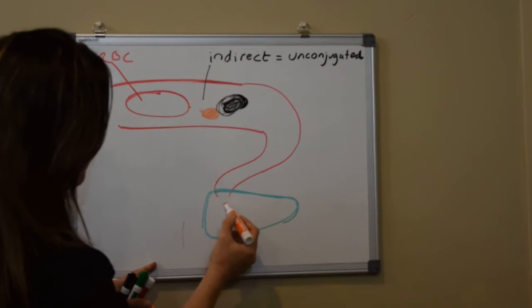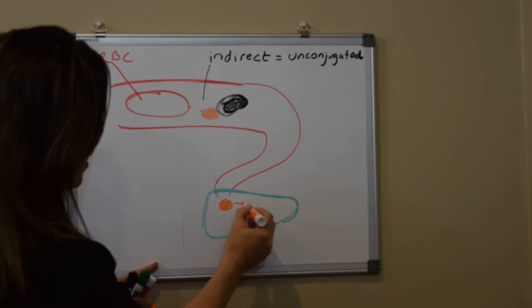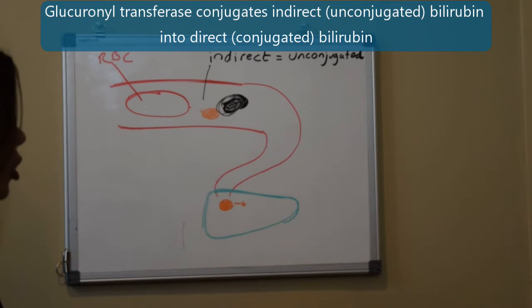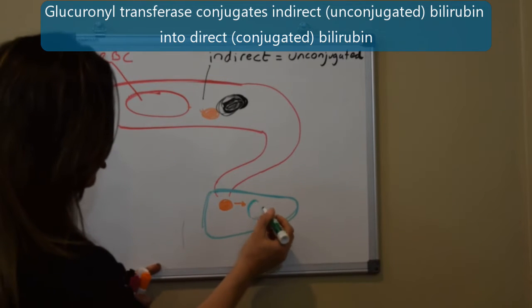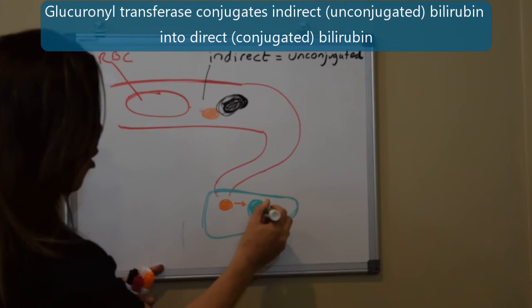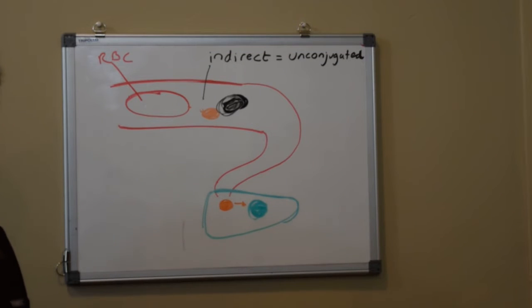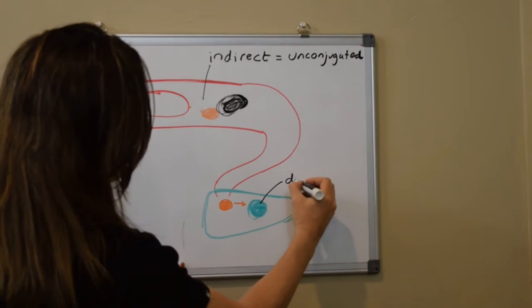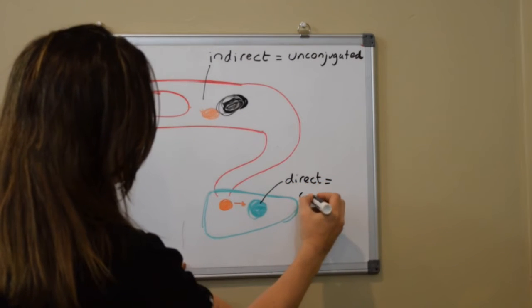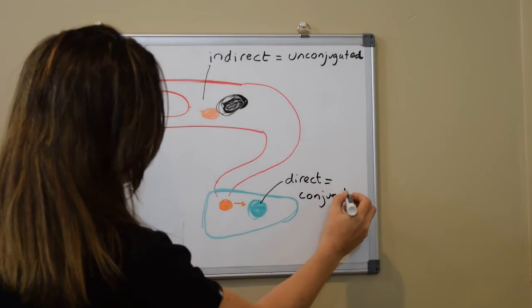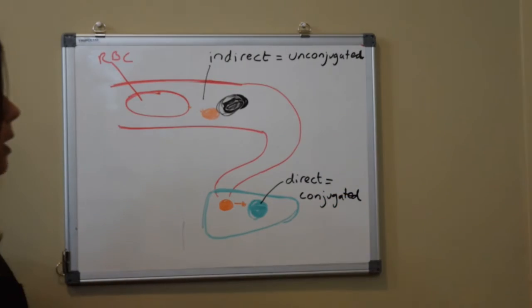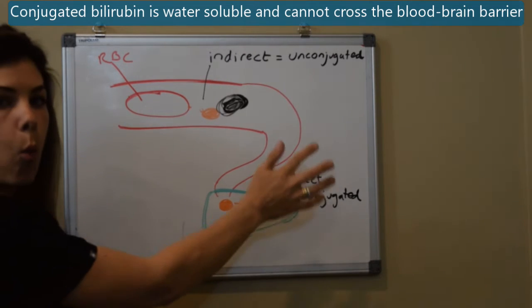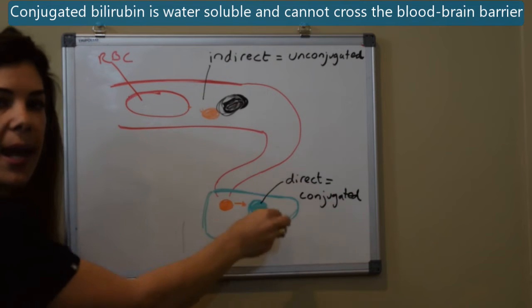In the liver the process of conjugation happens. In the liver an enzyme called glucuronyl transferase conjugates the indirect bilirubin to direct bilirubin or conjugated bilirubin. You can see here in the liver we have direct or conjugated bilirubin.